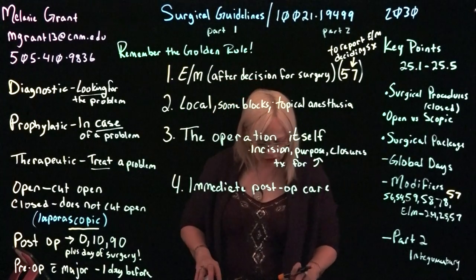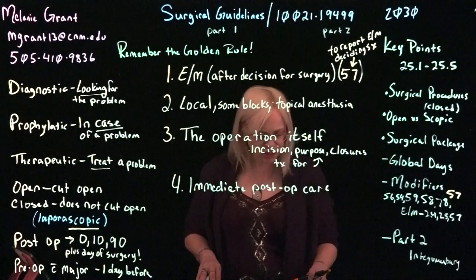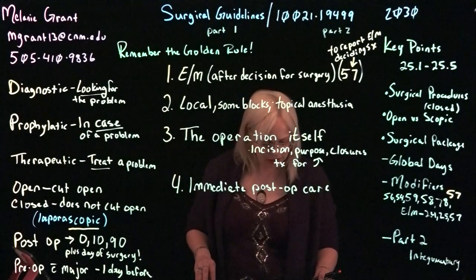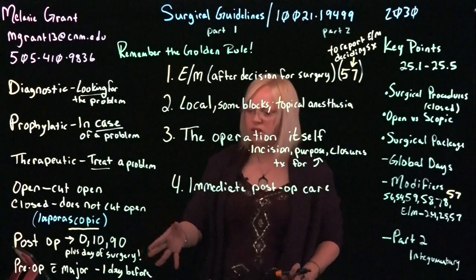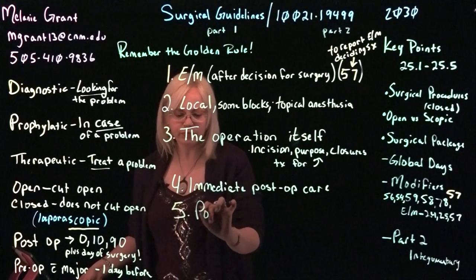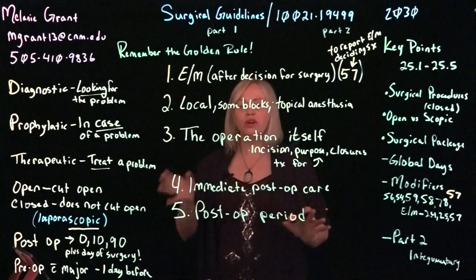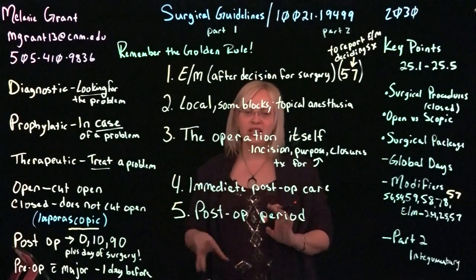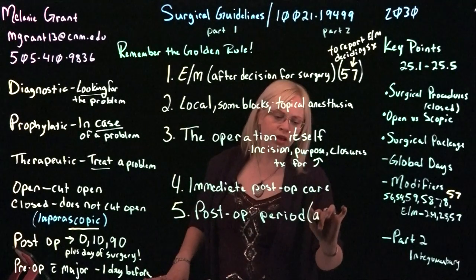Number five is follow-up care, which includes post-op visits, care for typical complications, pain management, dressing changes, removal of sutures, staples, tubes, casts, and any other services considered standard of care during the global period. Some procedures may require longer periods of post-operative care by the surgeon as deemed acceptable standard of care. Basically, unless the patient has a return trip to the OR, any care related to that procedure — even infections, even unexpected things — is part of this, if it doesn't require a secondary procedure.